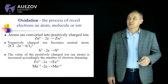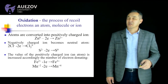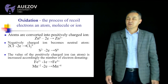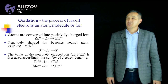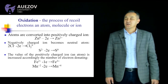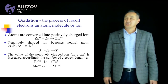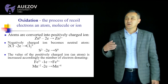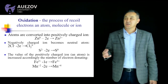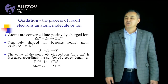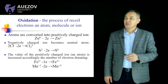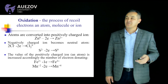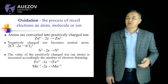There are oxidation and reduction. Oxidation is the process of giving electrons from an atom, molecule, or ion. Atoms are converted into positively charged ions. For example, a zinc atom gives two electrons and becomes a zinc ion.